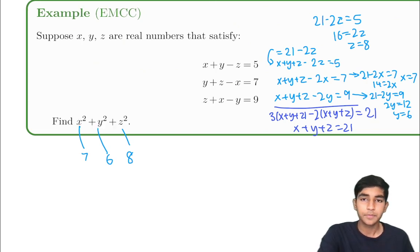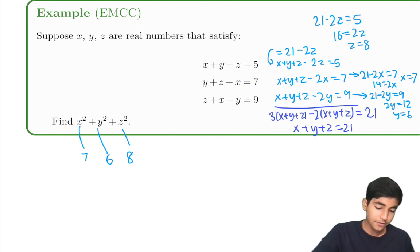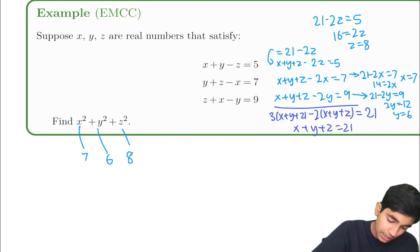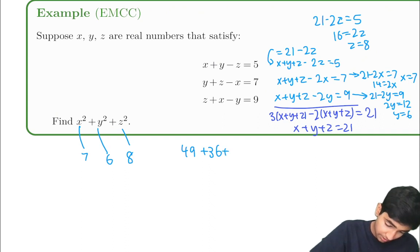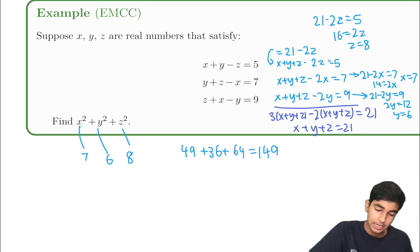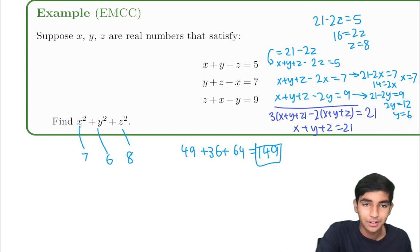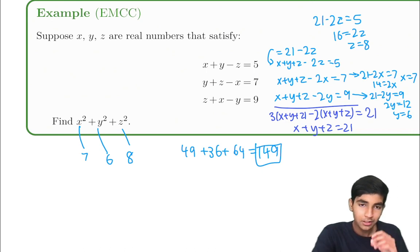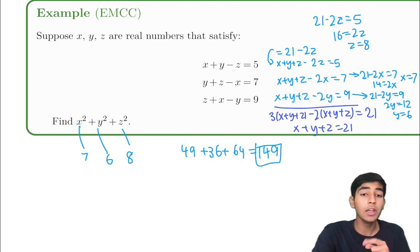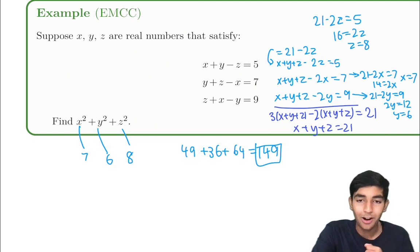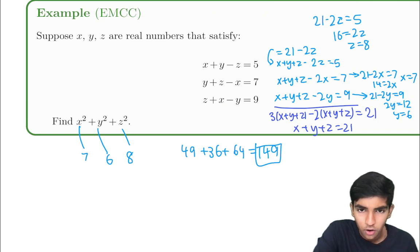So x is 7, y is 6, z is 8. Now we just plug in: 49 plus 36 plus 64, which equals 149. The key idea here was noticing that symmetry — a property we'll be using to solve many more equations, and definitely something you should always be on the lookout for, as it's very powerful.